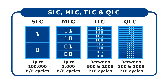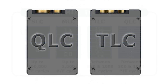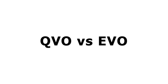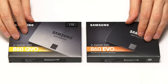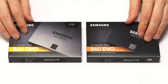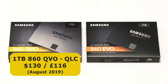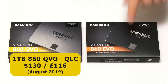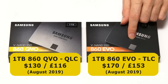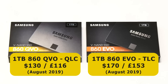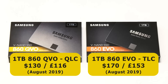This may lead you to conclude that you should never buy a QLC SSD. However, the practical implications depend on how the drive performs in actual use. Here we have our two Samsung 860 SSDs, both 1TB 2.5-inch drives. The QVO is a QLC drive which in August 2019 has a list price of $130 or £116, whilst the EVO is a TLC drive currently listed at $170 or £153. Based on official Samsung prices, the QVO lives up to the promise of a 25% lower cost per gigabyte.